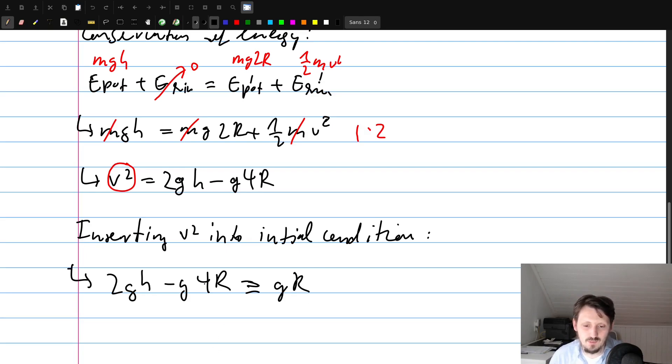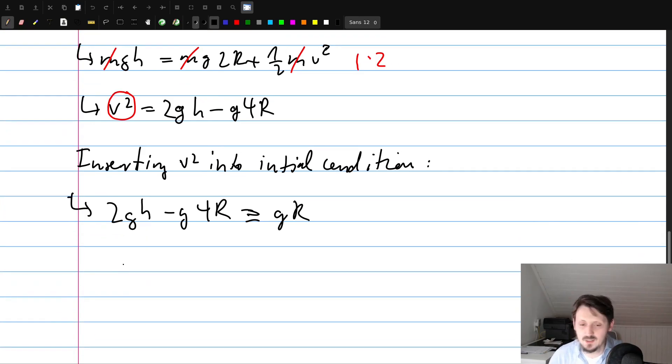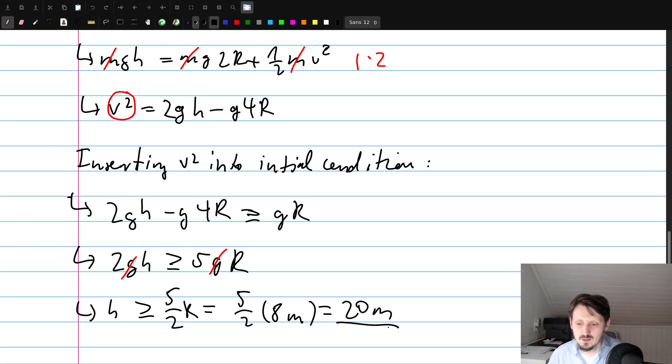Okay, and this is everything. H is, as I said, what we want to calculate actually. So we can write down here, if we bring this to the other side, 2GH must be larger or equal to 5GR. And of course G we can also cancel out here again. And then what follows at the end is that H must be larger than 5 halves R, or 2.5R. And this we know, R as I said before, this is 8 meters. So what comes out at the end as a result is 40 divided by 2, which means 20 meters.